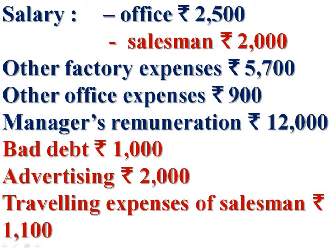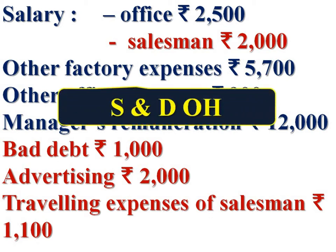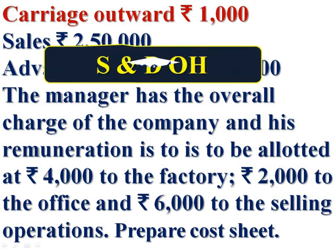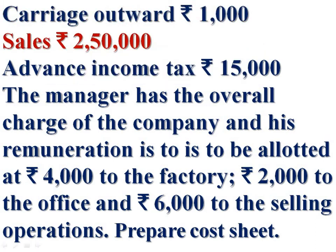Bad debt, advertising, travelling expense of salesmen, salary of salesmen — these are relating to sales and distribution, therefore these are selling and distribution overhead. Carriage outward — it is also a selling and distribution overhead. We include it in the selling overhead on the cost sheet.